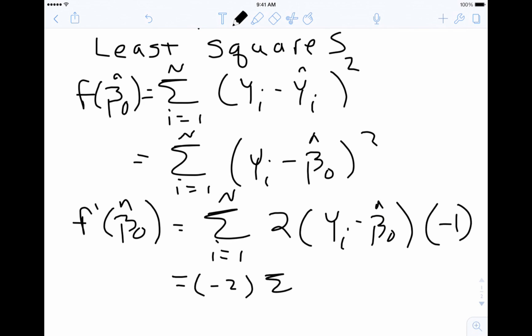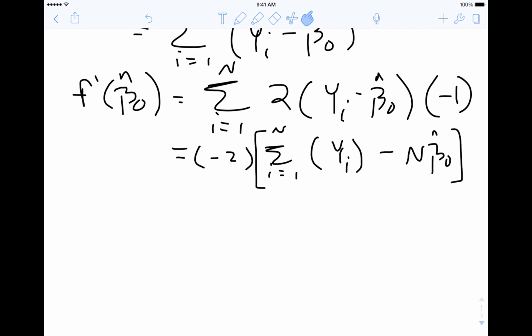And then let's make this prettier. This is just simply negative 2 times the sum i equals 1 to n of yi. I'm going to distribute the summation, so I have the sum i equals 1 to n of yi. If I sum beta naught hat n times, I'm going to get n beta naught hats. The second derivative is simply going to be negative 2 times the derivative of what's in there, which is just negative n, which is equal to 2n. So the second derivative is positive. That means the zero of the first derivative will be a minima.